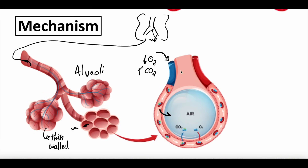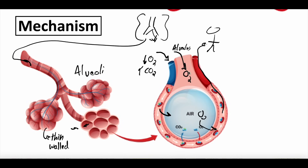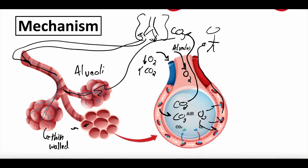Each alveolus receives oxygen that is breathed in, while carbon dioxide from the capillary is pumped out into the alveolus. Oxygen from the alveolus diffuses into the capillary to be distributed to the rest of the body, while carbon dioxide moves into the alveolus and is then breathed out — traveling back through the bronchioles, bronchi, trachea, and out the mouth. This process repeats with each breath. On a ventilator, the ventilator pumps air in and out through the trachea, bronchi, bronchioles, and into the alveoli.